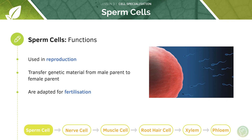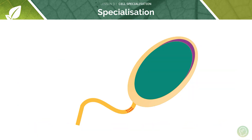Now let's have a look at some examples, starting with sperm cells. Sperm cells are used in reproduction — they transfer genetic information from the male parent to the female parent. Therefore, sperm cells have to be adapted to fertilisation. Let's take a closer look at the structure of a sperm cell.